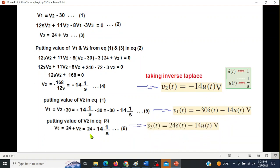And finally, V3(t) is also 24, so 24 delta(t) minus 14 U(t). So all three values we have got. And finally, we can write the answer as V1, V2, and V3. So I hope you have been able to follow this. Please let me know through your comments. Thank you.